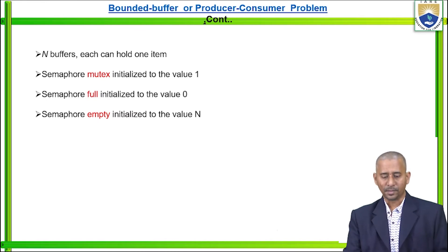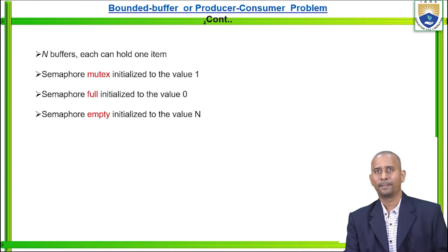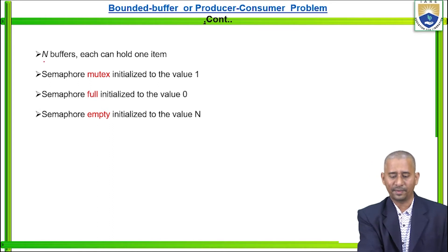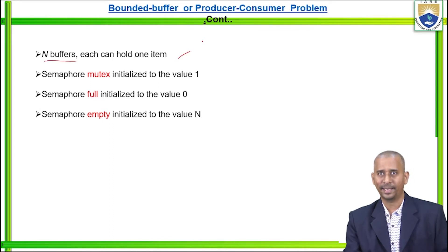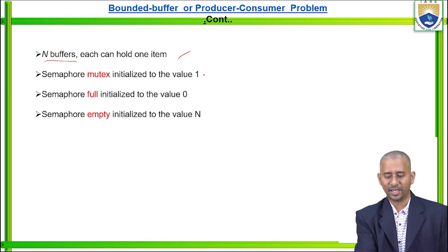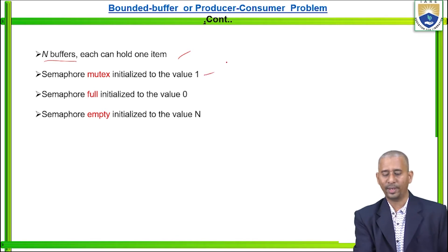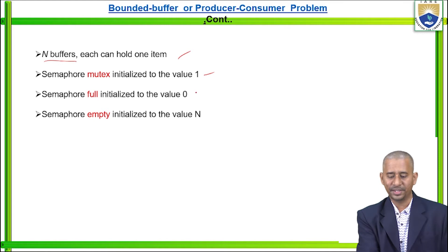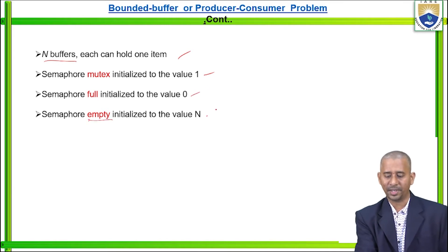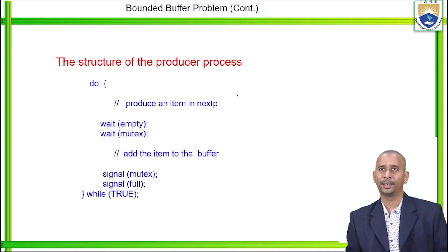According to the bounded buffer problem, we have n number of buffers, each able to hold only one item at a time. We use the semaphore mutex initialized to value 1, semaphore full initialized to value 0, and semaphore empty initialized to value n. These are the prerequisites.